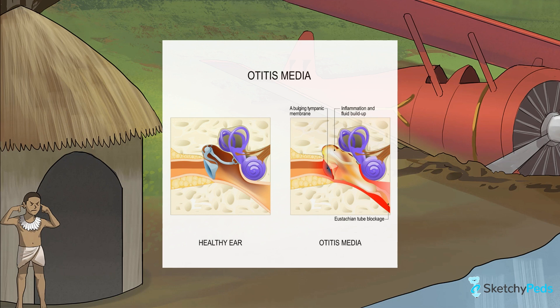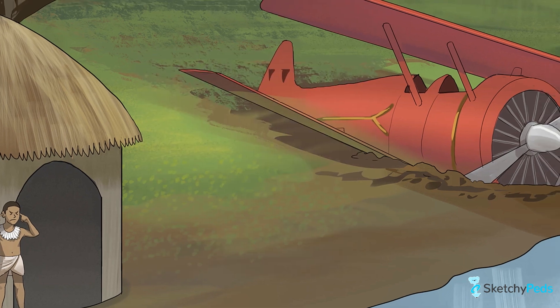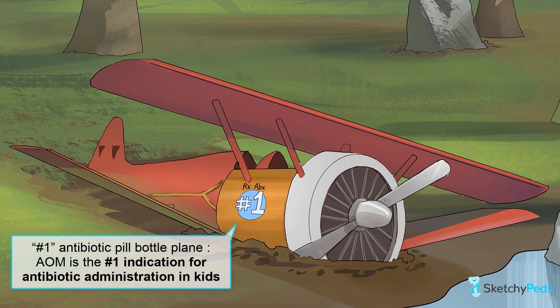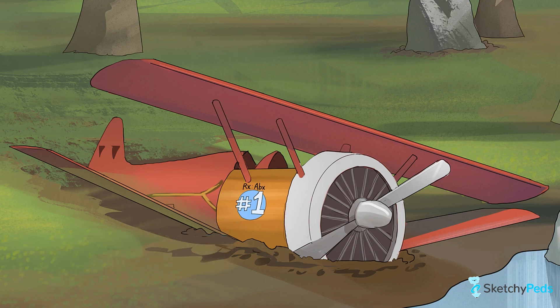Our kid in the bottom left here has his fingers in his ears, trying to block out the pain from his blocked eustachian tube, and also the noise from Amelia Earhart's ear plane. Fun fact: AOM is actually the most common reason antibiotics are given to children. See our number one antibiotic pill bottle making up the hull of the ear plane? This makes it super important to understand how to diagnose it and treat correctly.